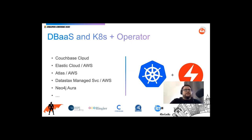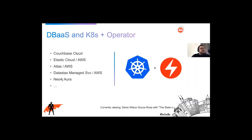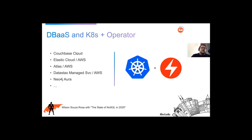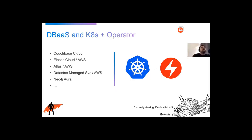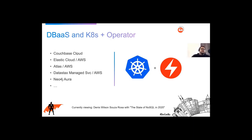All NoSQL vendors noticed this trend, and pretty much all NoSQL providers now have their own cloud offerings. Couchbase has one, Elastic, MongoDB, DataStax, and Neo4j — they all have database-as-a-service offerings. There's also another trending topic: running databases on Kubernetes with operators, which essentially helps you achieve something similar to database-as-a-service. That's exactly my talk on Friday, called 'Database on Kubernetes: Why You Should Care' — one of my favorite talks.